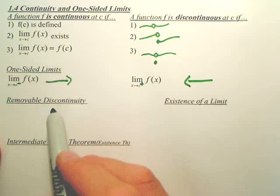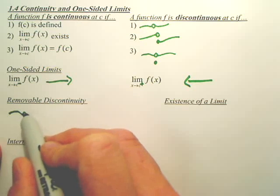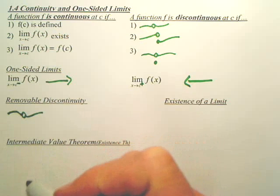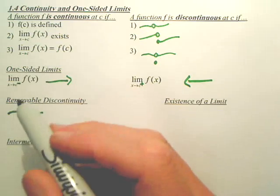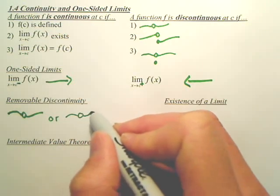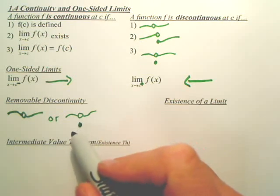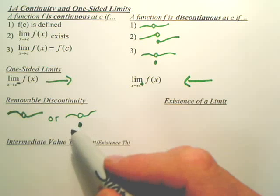Removable discontinuities. A removable discontinuity is that. That is basically a removable discontinuity. Or that. They're both the same thing. It's just this has a value as well. Those are both removable discontinuities.